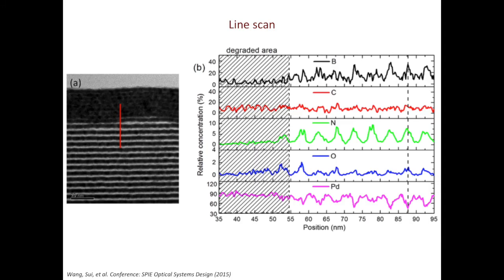You can also do line EDS. I found this example online. The authors did a line EDS on the specimen as shown here. From the EDS spectra, you can see the chemical periodicity. You can also see where it is depleted with palladium, it is enriched with oxygen, nitrogen, maybe carbon, and boron.